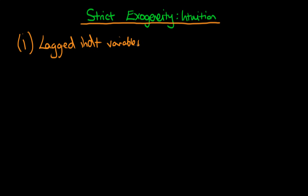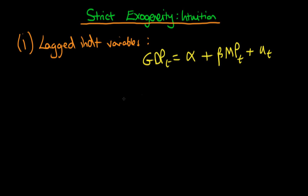The example from the last video was where we had GDP at time t depending on the level of monetary policy — some sort of monetary policy indicator at time t — plus some error term at time t. The strict exogeneity assumption in this circumstance requires that the expectation of this error term u_t, given monetary policy at any other time s (including where s equals t), has to be equal to zero.